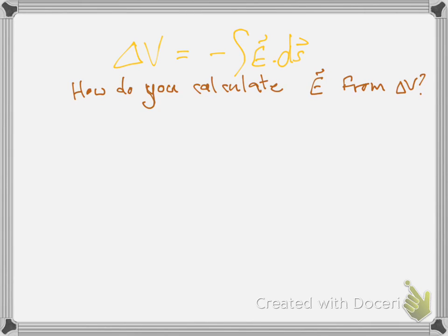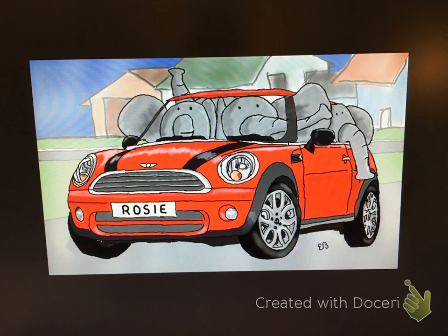The last of the elephant jokes: How many elephants can you fit in a Mini Cooper? Four — two in front, two in back. How do you know if there's an elephant in the refrigerator? Footprints in the butter. Two elephants? You can hear them giggling. Three? The door doesn't shut quite right. Four elephants? There's a Mini Cooper parked out front.